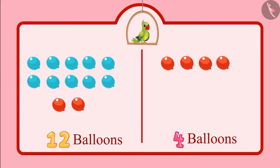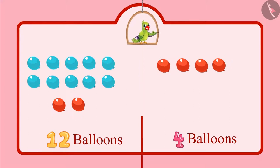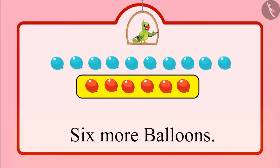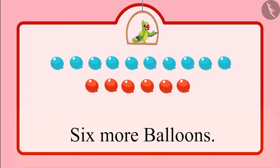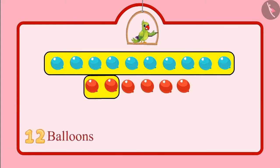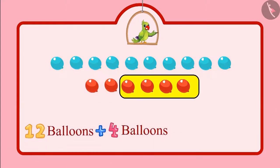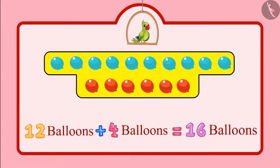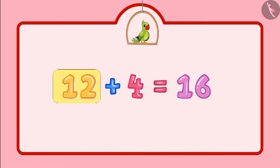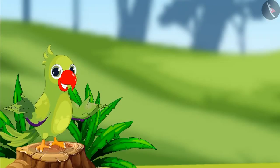If we see all the balloons together, we have one group of ten balloons and six more balloons. That means we have a total of sixteen balloons. Yes children, twelve and four balloons make a total of sixteen. So when we add twelve and four, we get a total of sixteen.